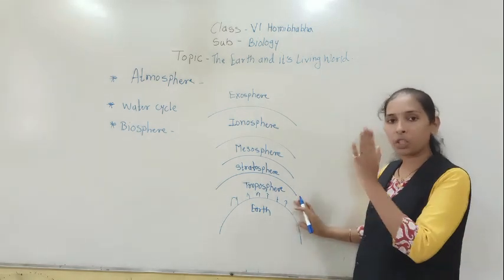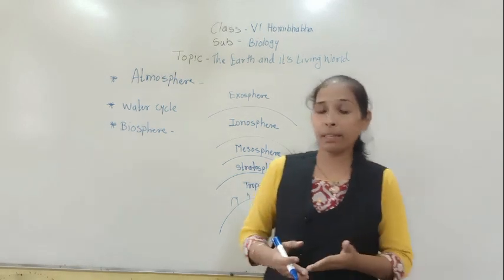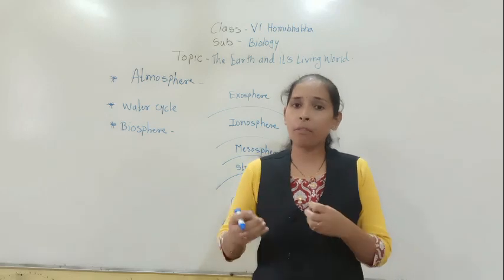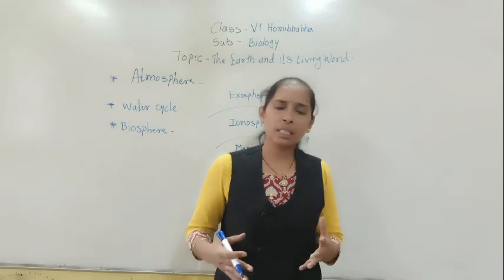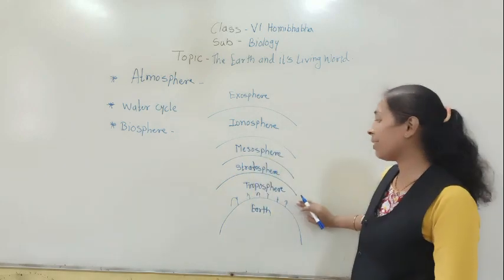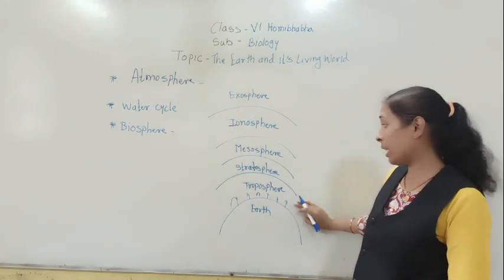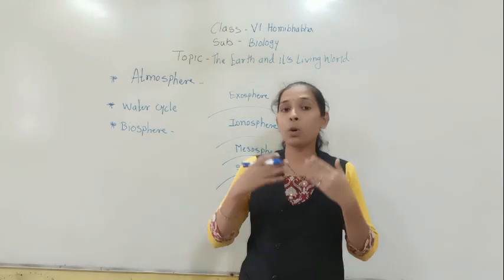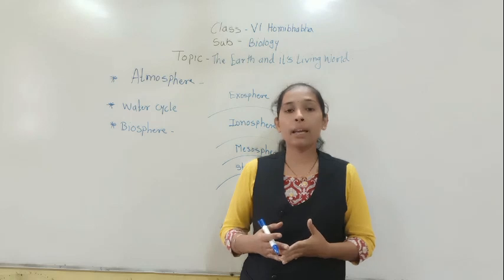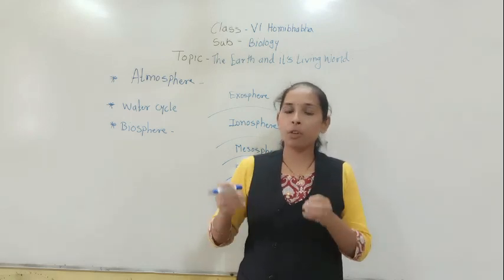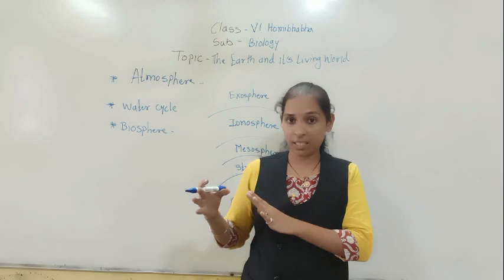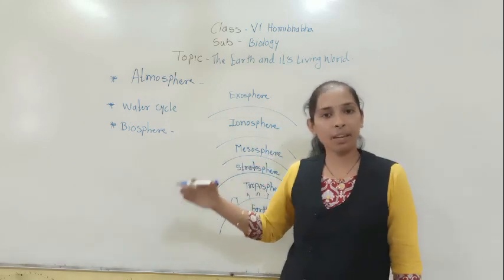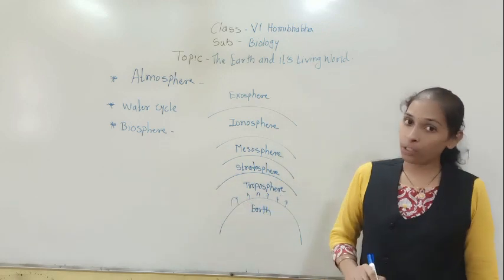The weather changes that take place in the troposphere include formation of clouds, rain, fog, snowfall — all these things take place in the troposphere. A very important thing is that as we go higher up in the atmosphere, the air gets rarer, or the amount of air decreases. So in the upper part of the troposphere there is less air compared to the lower part.